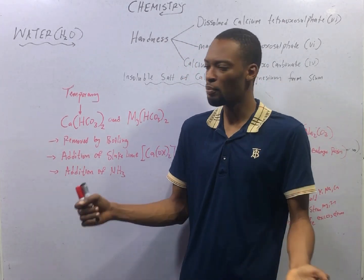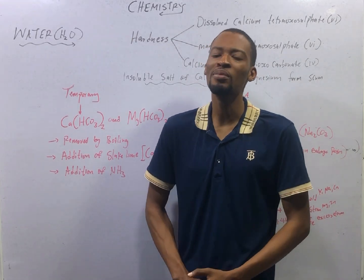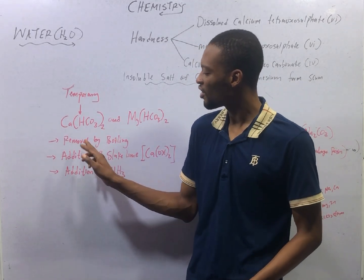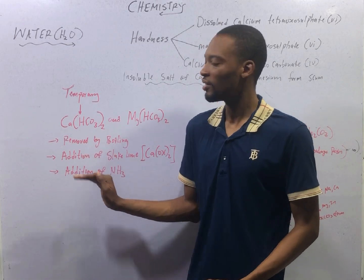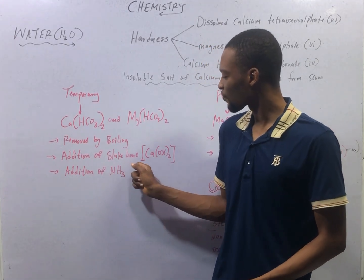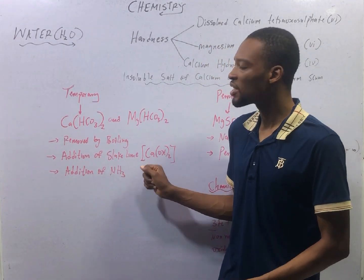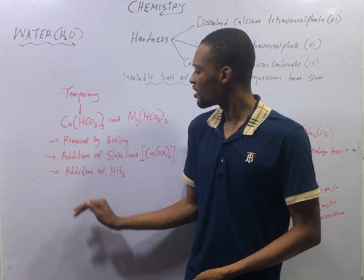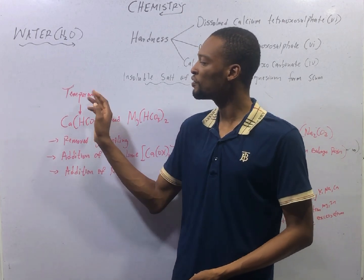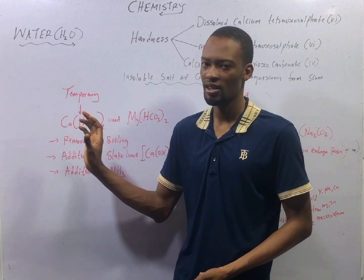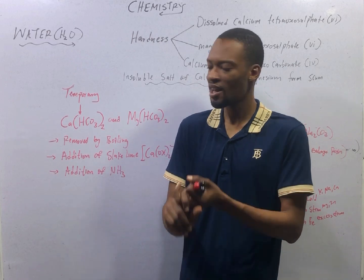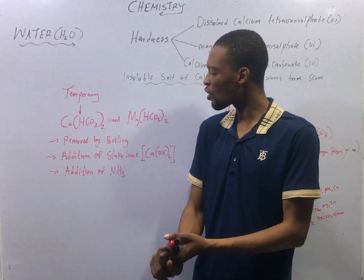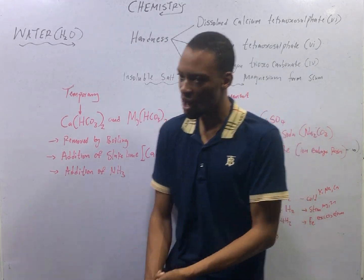Temporary hardness is referred to as such because it can be removed by boiling. To remove temporary hardness: boil the water, or add slaked lime Ca(OH)₂, or add ammonia.